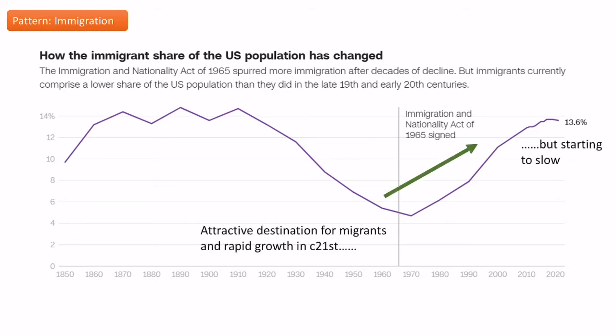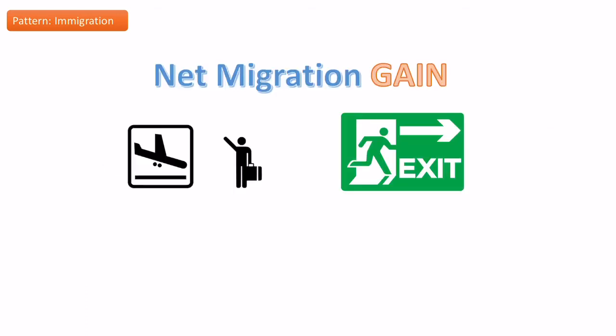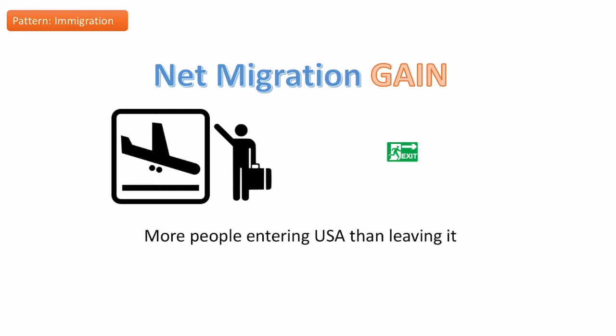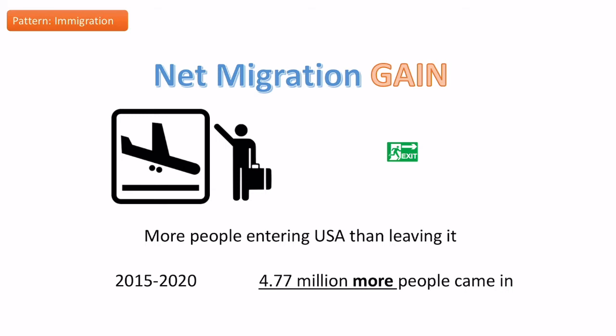The USA has become an attractive destination and we've seen rapid growth in immigration in the 21st century. There have been changes in policies since the 1960s that have meant more people have come in, though it's started to slow in the last couple of years. Around 13.6–13.7% of the US population is made up of immigrants. It's a country of net migration gain, meaning more people are entering than leaving — in the five years up to 2020, 4.7 million more people came in than left.